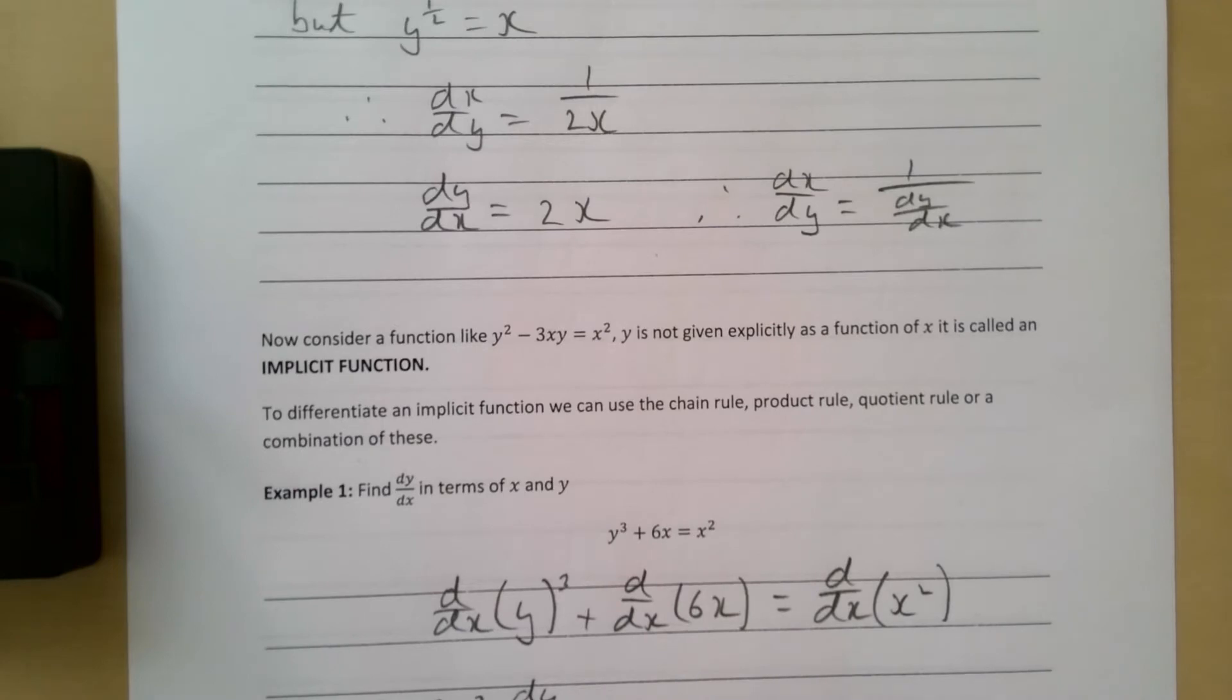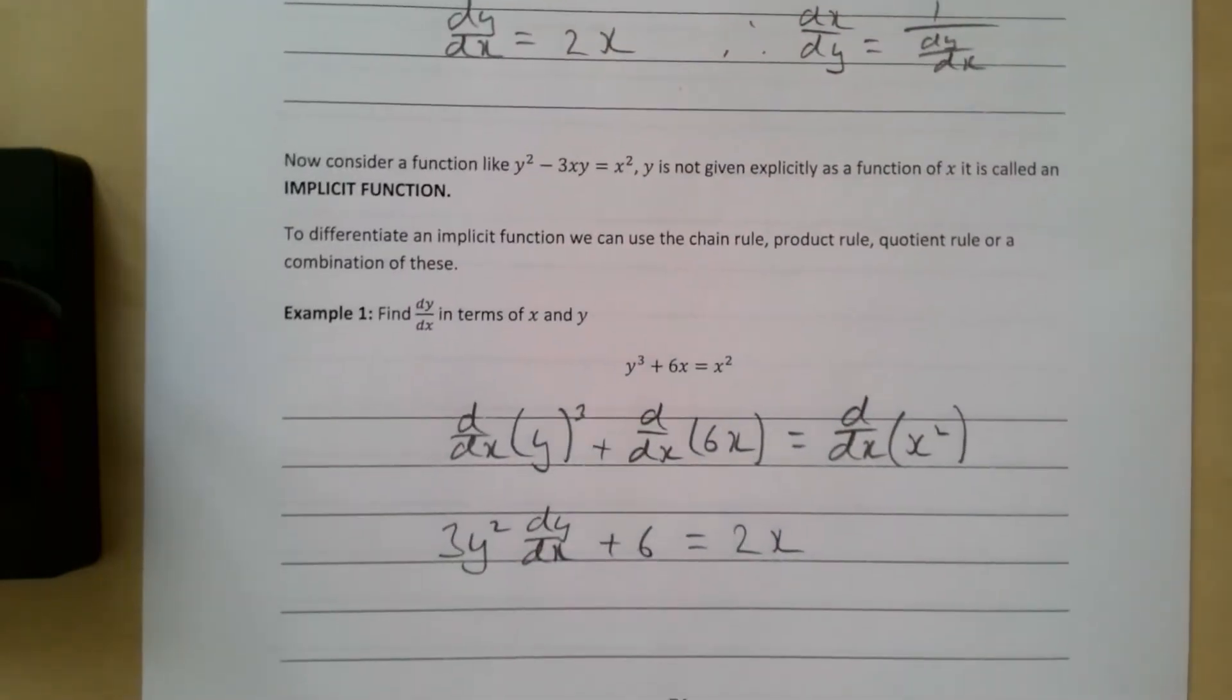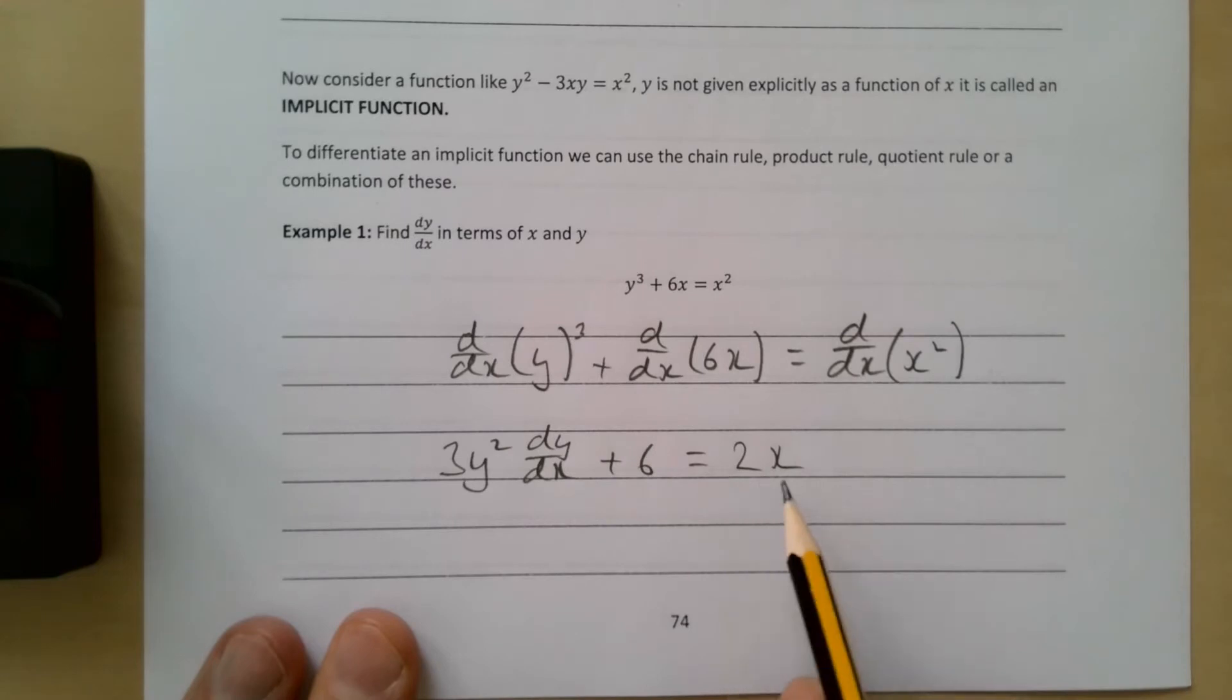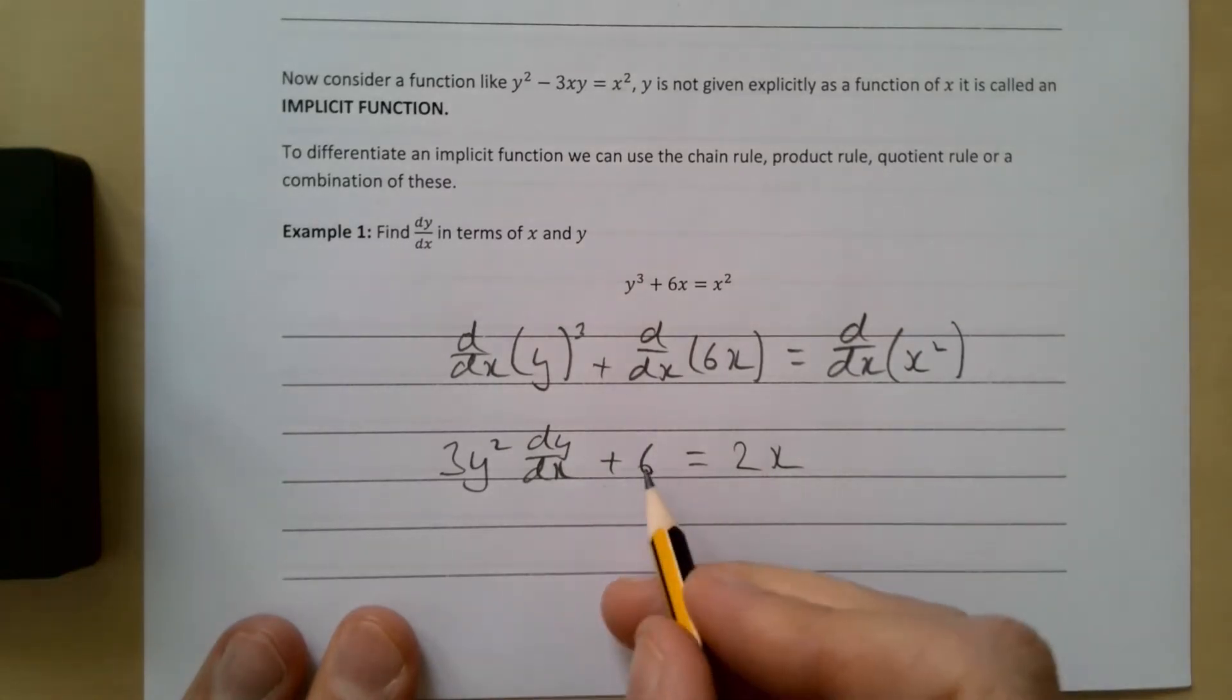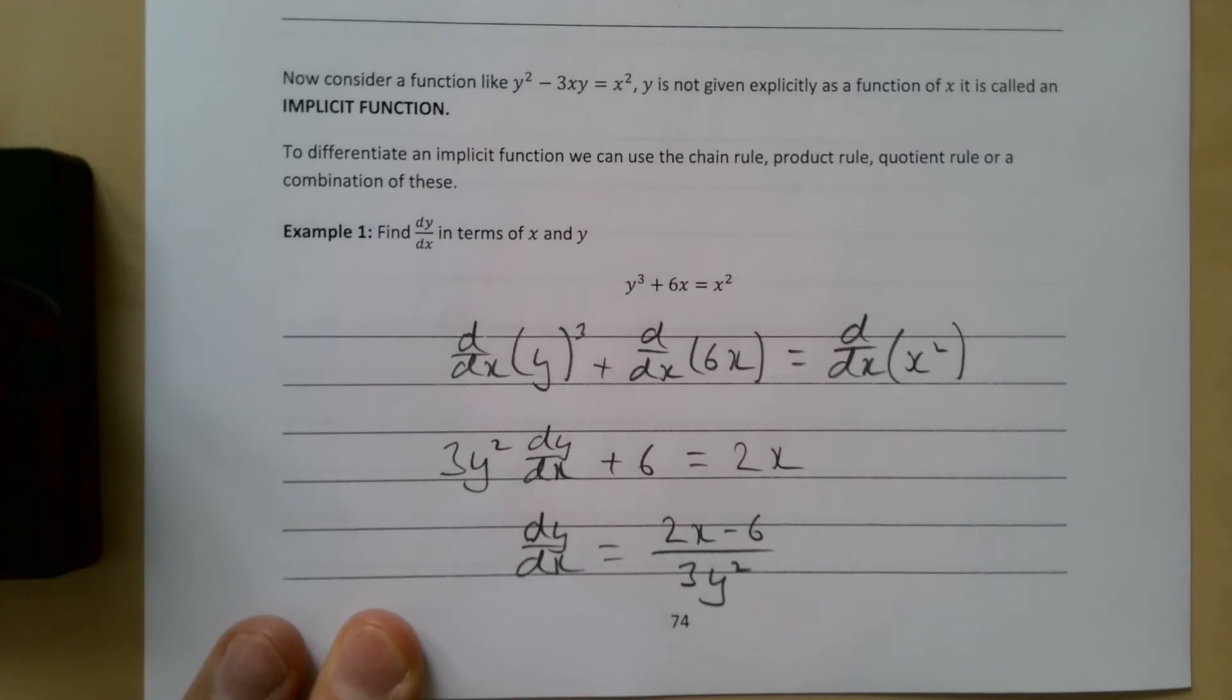Differentiating each term: we get 3y² dy/dx, then plus 6, then 2x on the other side. Getting dy/dx on its own, we take the 6 over to the other side and divide by 3y², so dy/dx = (2x - 6)/(3y²).